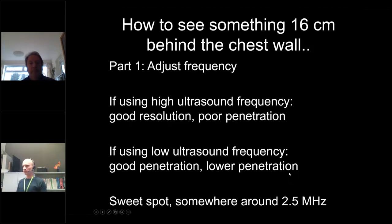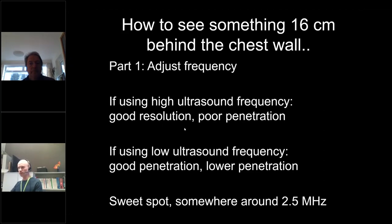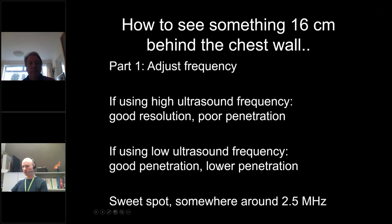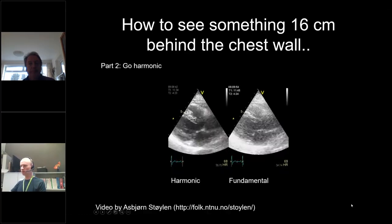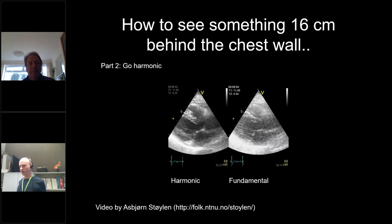How do we see something 16 to 20 centimeters behind the chest wall? One thing you can do is adjust the frequency. High ultrasound frequency gives good resolution but you can't penetrate to great depth. If you have a very low frequency you can penetrate deeply but with lower resolution. The sweet spot for the heart is somewhere around 2.5 megahertz — that's the frequency typically used for the heart.